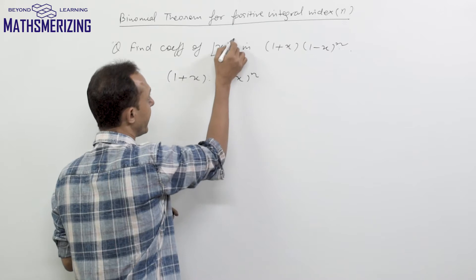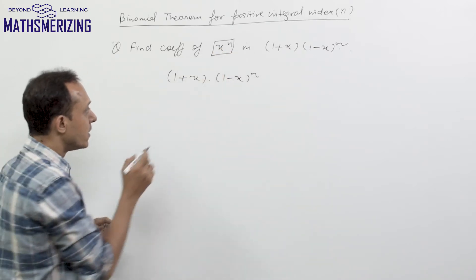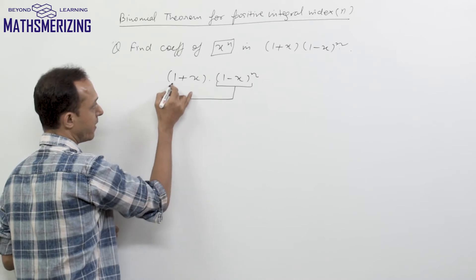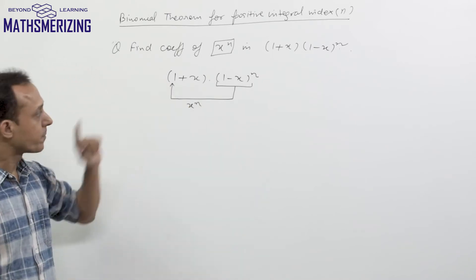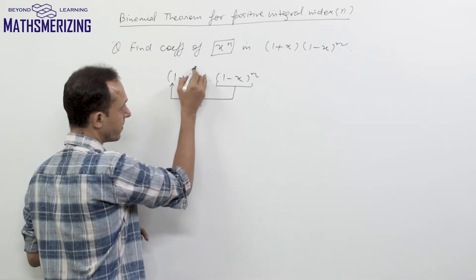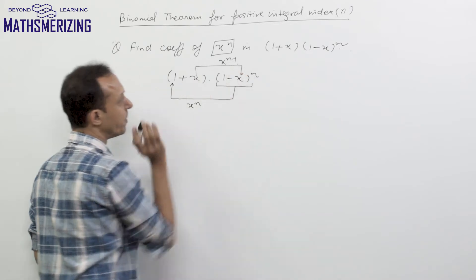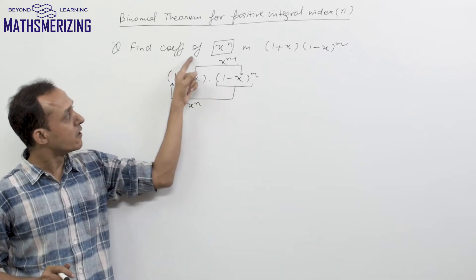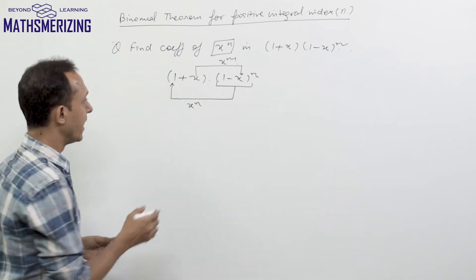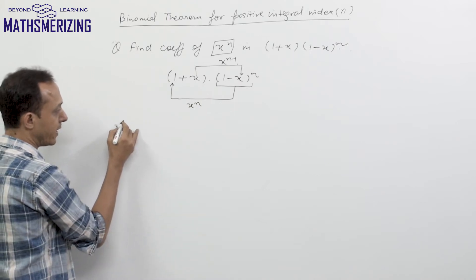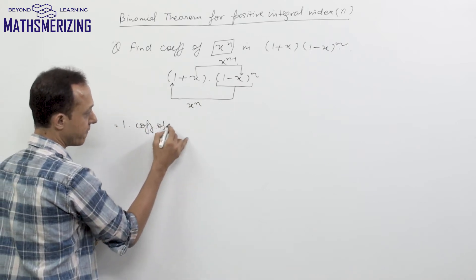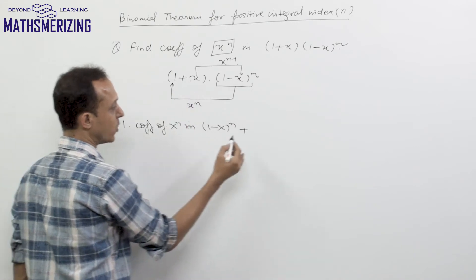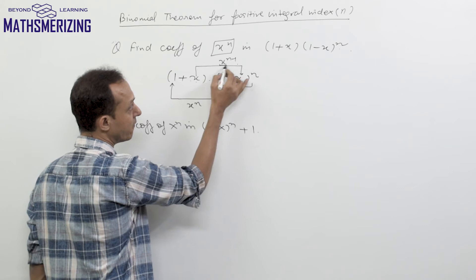I need to find the coefficient of x^n. There are two ways to get x^n from this series: first, when x^n gets multiplied with 1, and second, when x gets multiplied with x^(n-1), since x times x^(n-1) equals x^n. So I need to find these two coefficients: 1 times the coefficient of x^n in (1-x)^n, plus the coefficient of x times the coefficient of x^(n-1) in (1-x)^n.